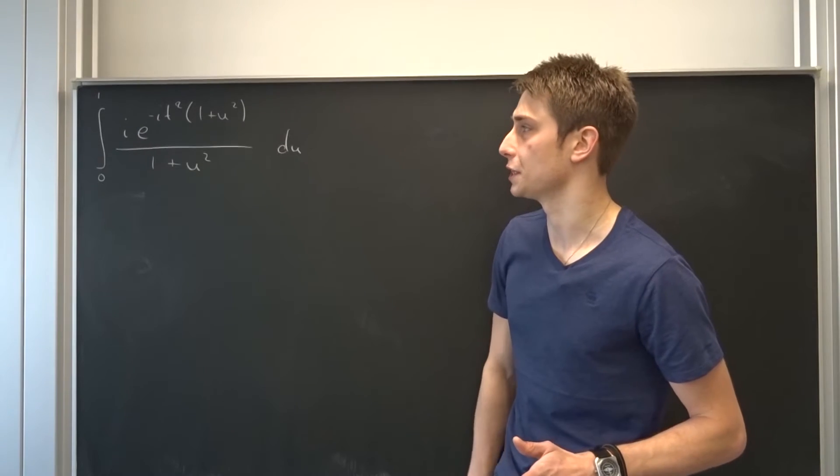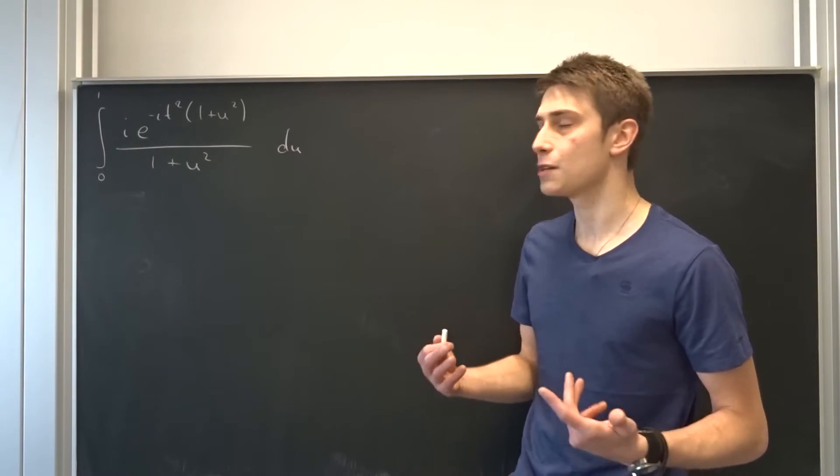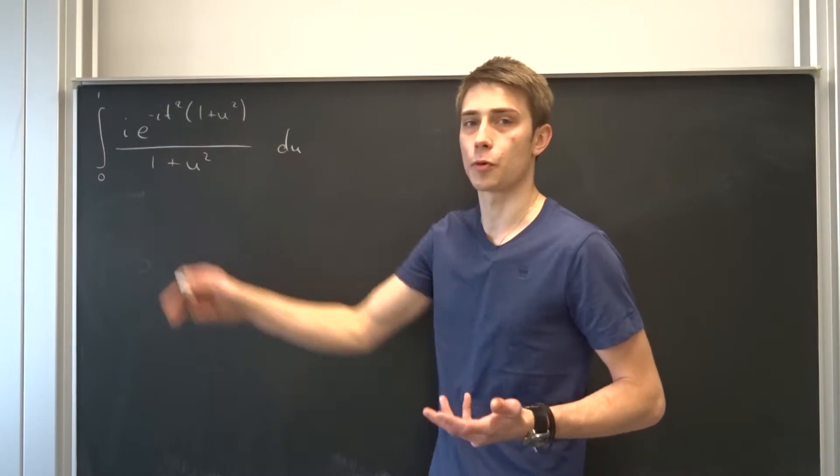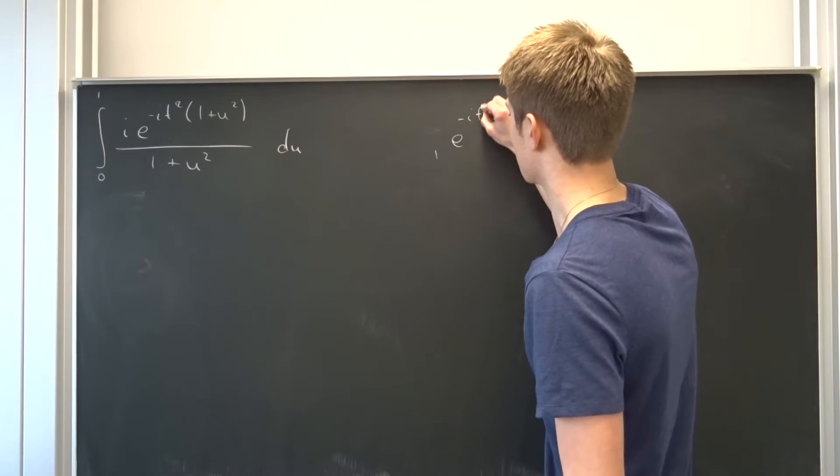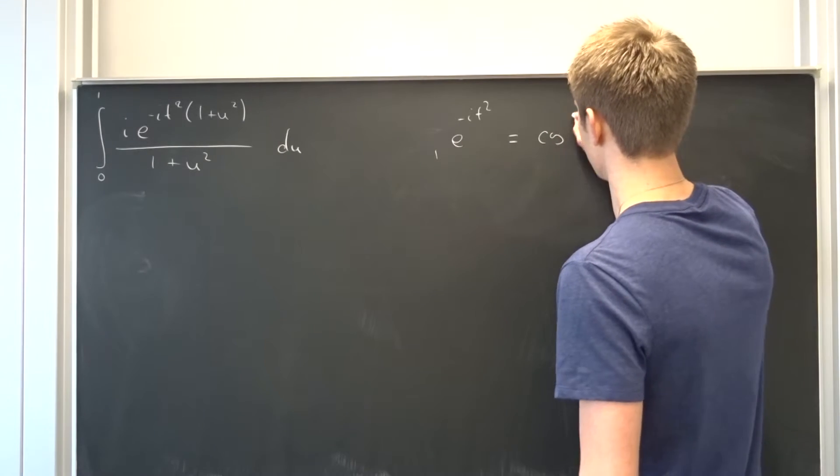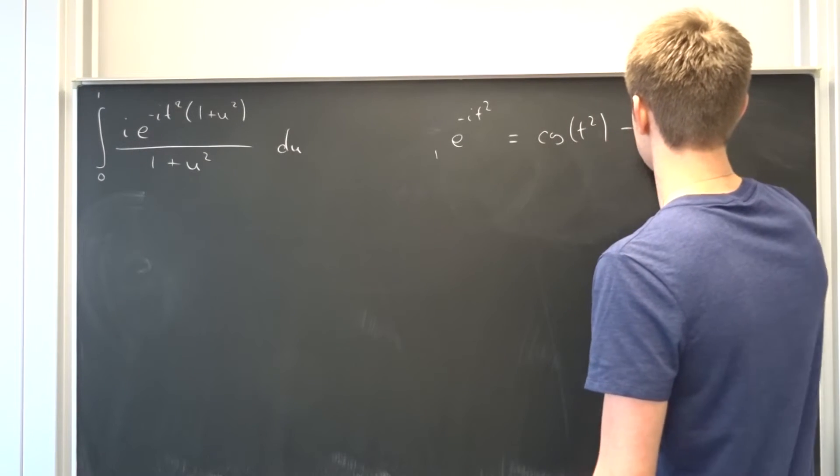So thanks a bunch for this. So let's see what we get if t approaches infinity right here. So as you might remember, e to the minus it squared is nothing else than the cosine of t squared minus i times the sine of t squared